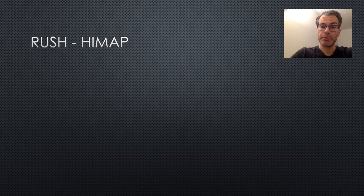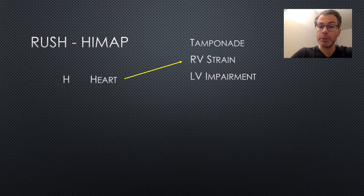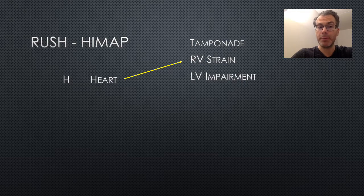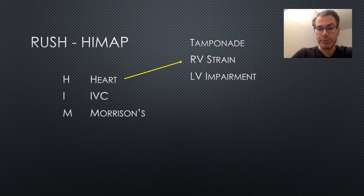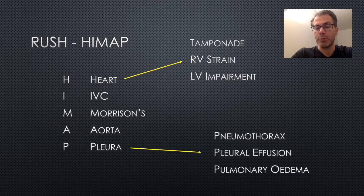So I used a structured shock protocol called HI-MAP for this young man. We started with the heart, and there are three things we look for: tamponade, RV strain, and LV impairment. Then we look at the IVC, Morrison's pouch for free fluid in the abdomen, the aorta, and then the pleura — where we also look for three things: pneumothorax or tension pneumothorax if it's causing shock, pleural effusion, and pulmonary edema.